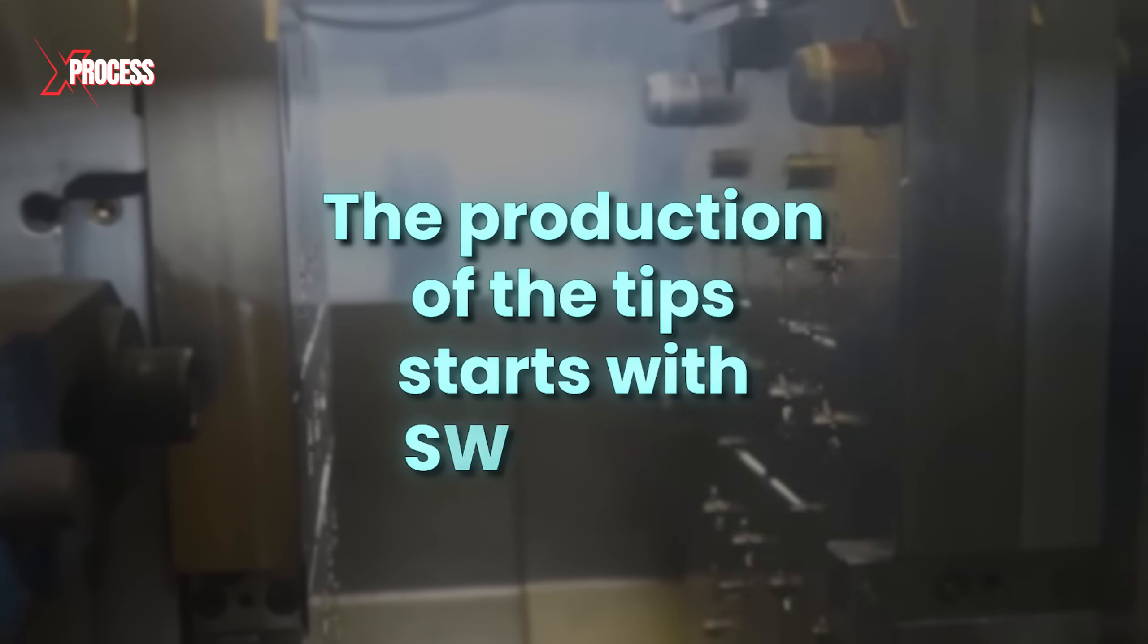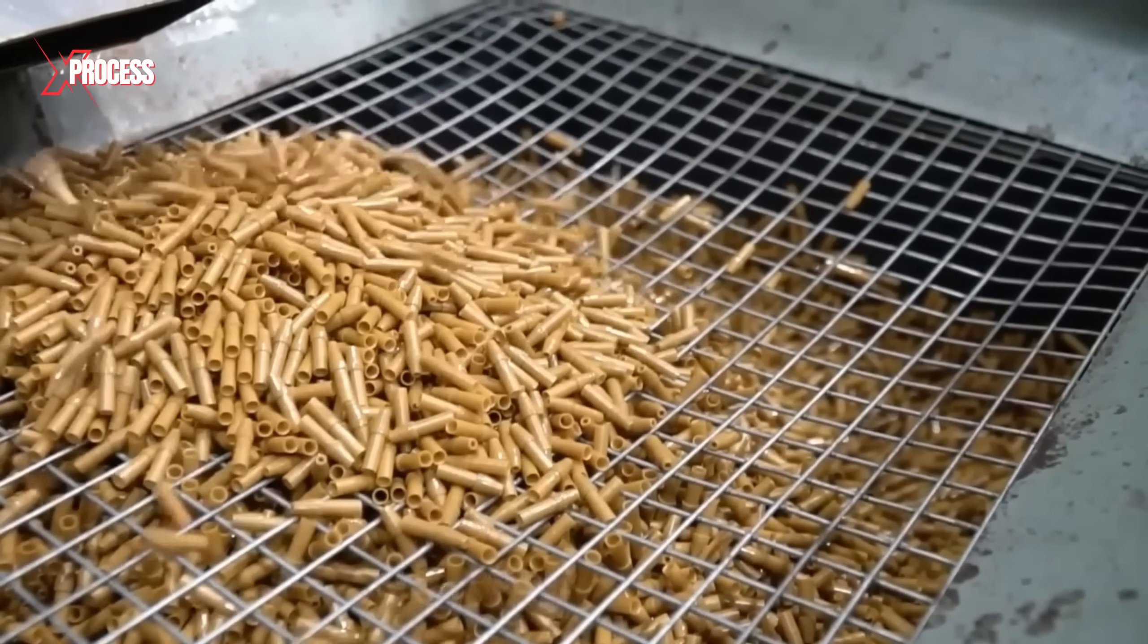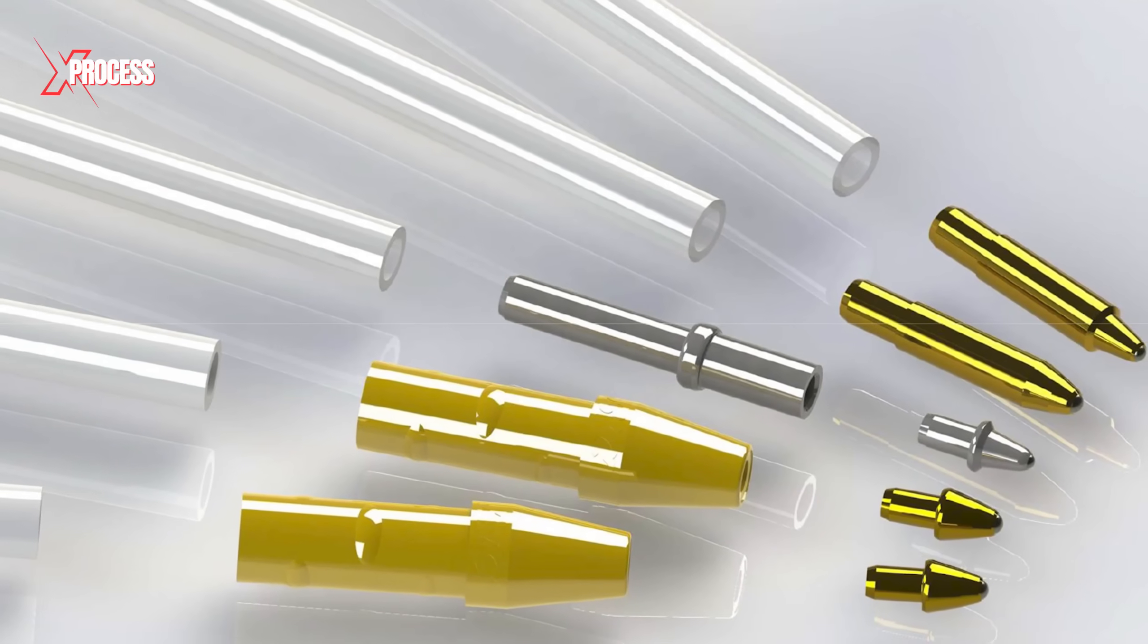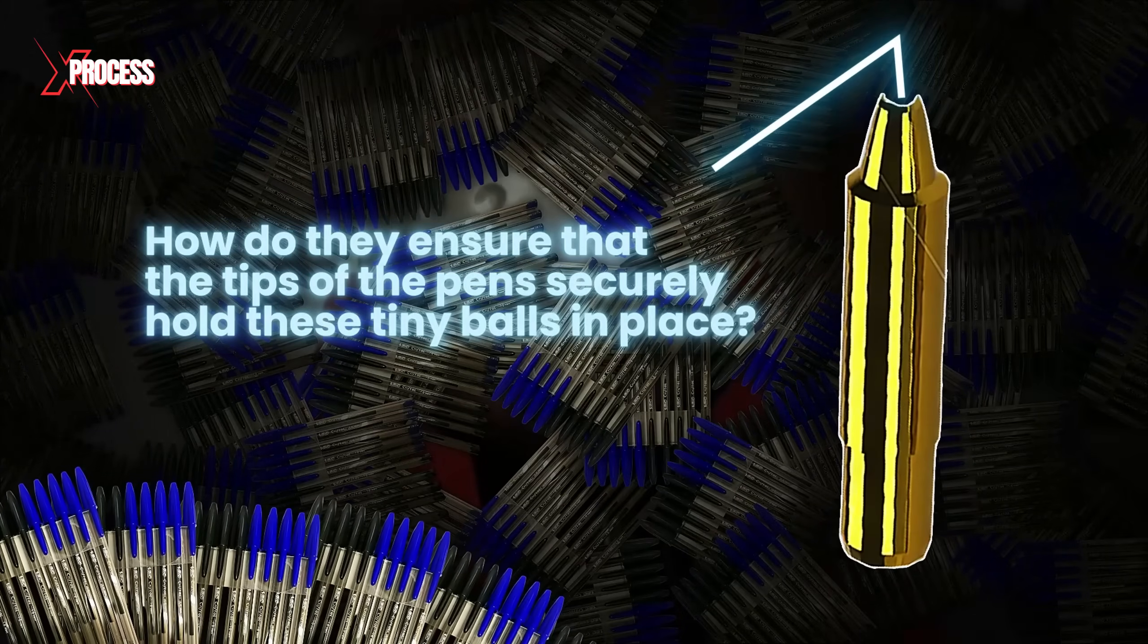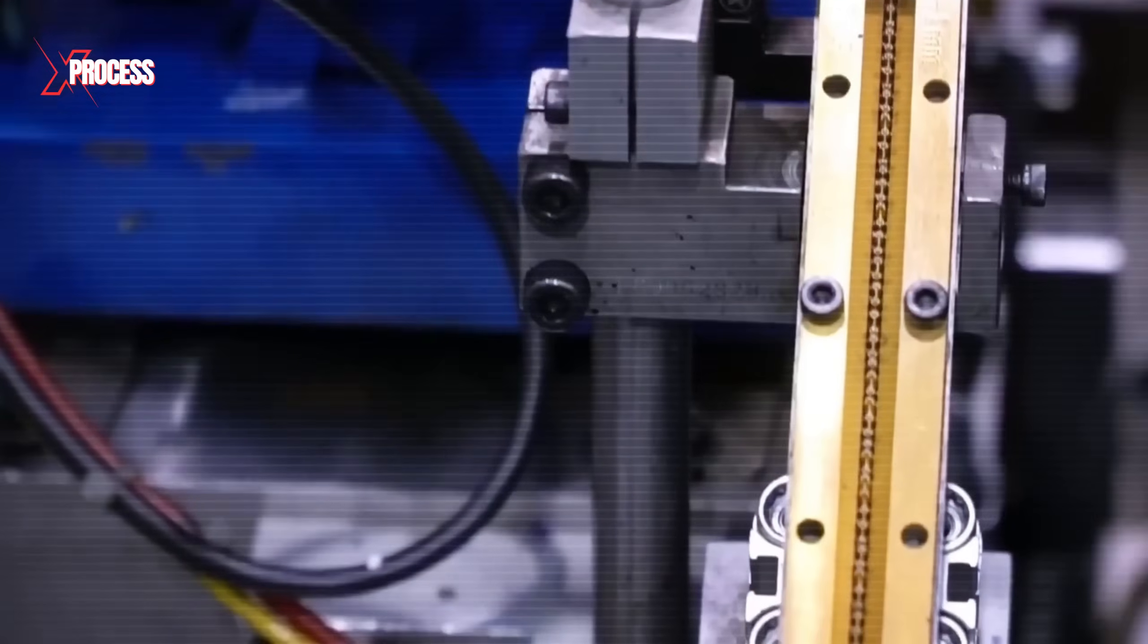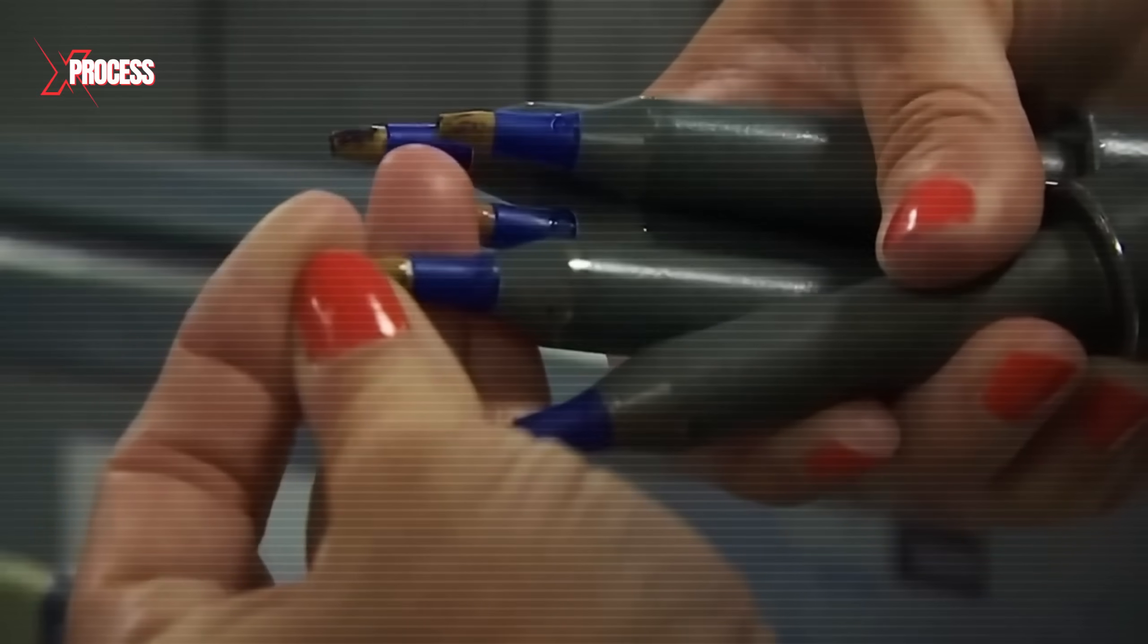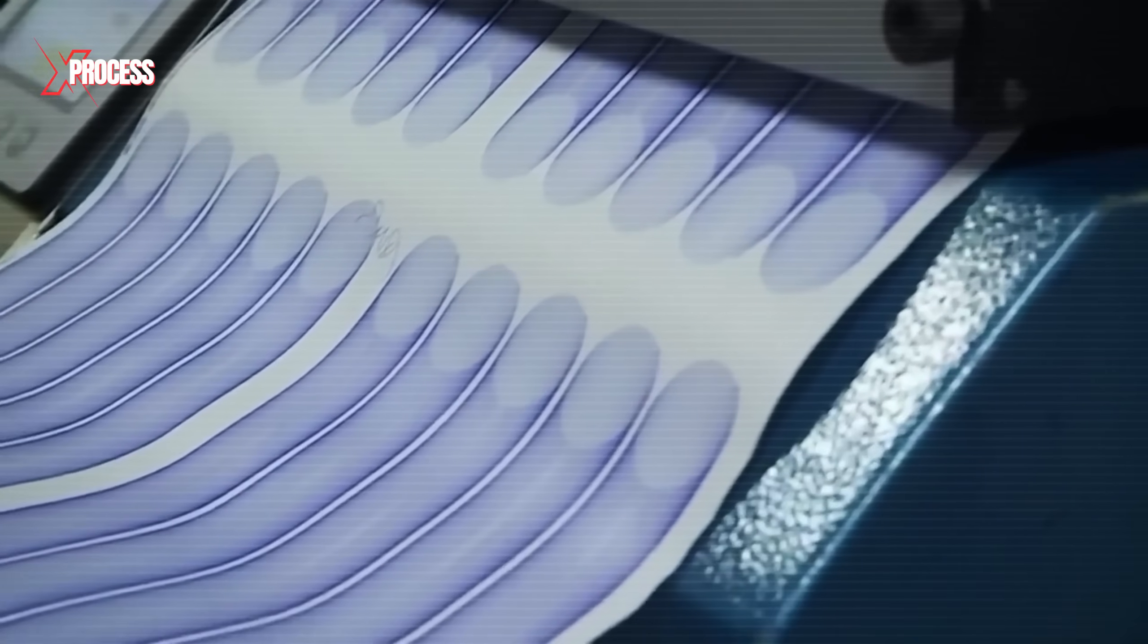The production of the tips starts with a manufacturing process called stamping. This mechanical operation shapes one end of the piece into a rounded and semi-pointed form. Once the tip is prepared, it's time to assemble it with the ball. But how do they ensure that the tips of the pens securely hold these tiny balls in place? This task requires meticulous attention to detail to guarantee a perfect fit. Once both pieces are properly joined, they undergo rigorous testing to ensure that the assembly doesn't affect the flow of ink.